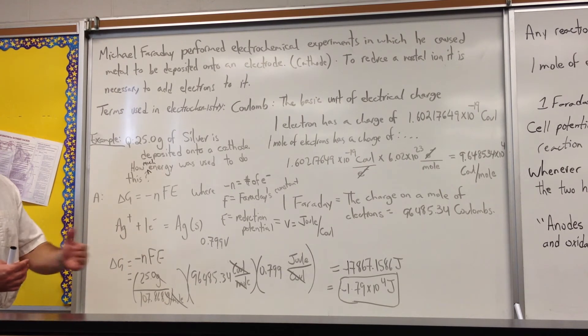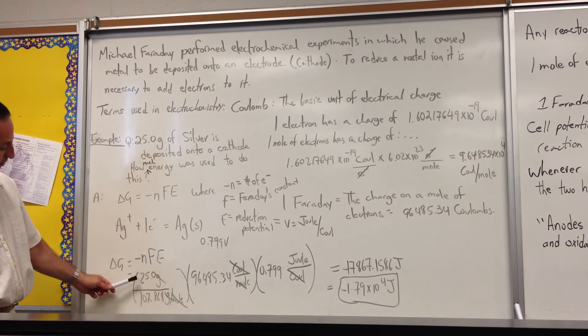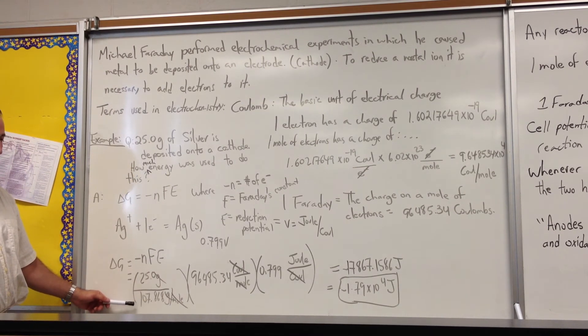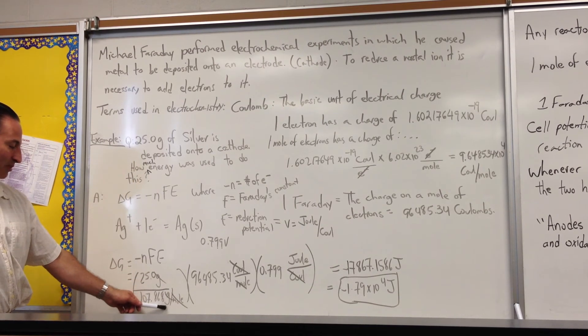If you plug in all these numbers into this equation, delta G equals negative NFE. We have 25 grams of silver, which is less than a quarter of a mole. So it's grams of silver over grams per mole times the Faraday constant.